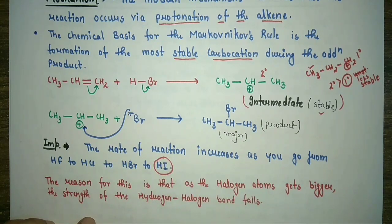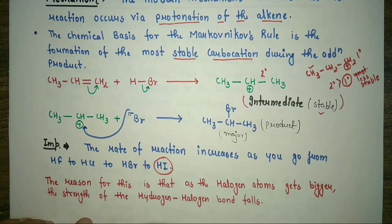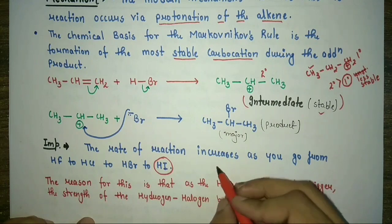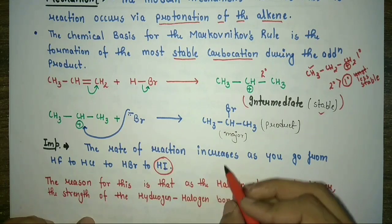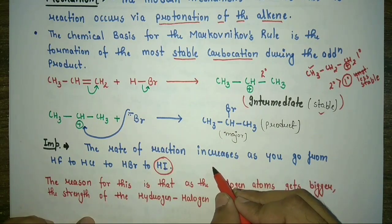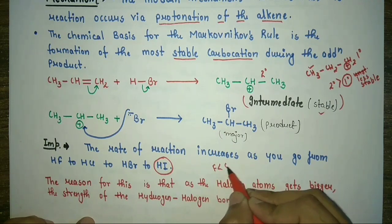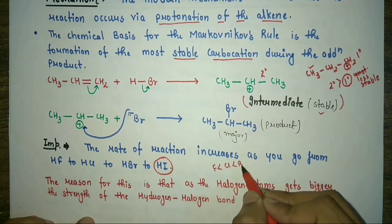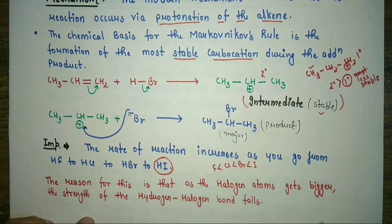The reason for this is that as the halogen atoms get bigger, the strength of the H-X bond falls. In other words, the size of halogen atoms increases from chlorine to bromine to iodine, making the bond progressively weaker and easier to break.